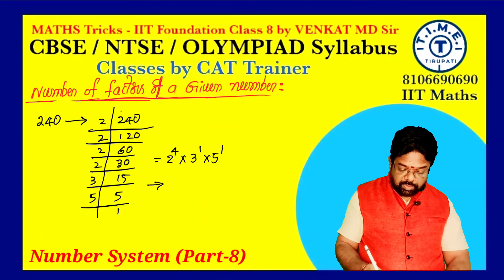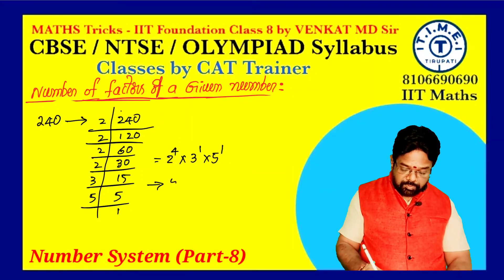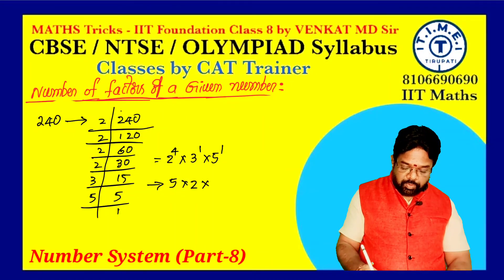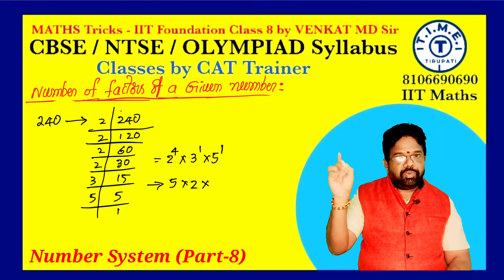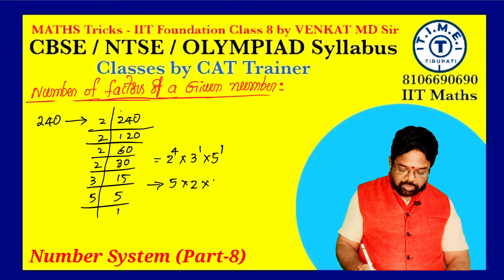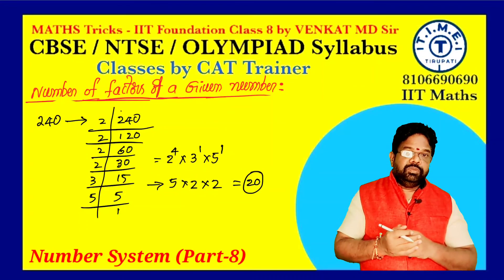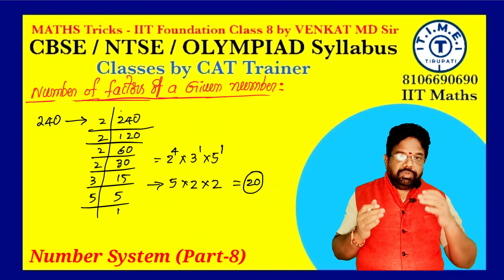Each power is increased by 1. 2 power 4 — power 4 increased by 1 is 5. 3 power 1 — increased by 1 is 2. 5 power 1 — increased by 1 is 2. Power is always increased by 1 and take the product: 5 × 2 × 2 = 20. So for 240, how many factors are there? 20 factors are there. Without writing and without counting, we can say how many factors there are for the given number.